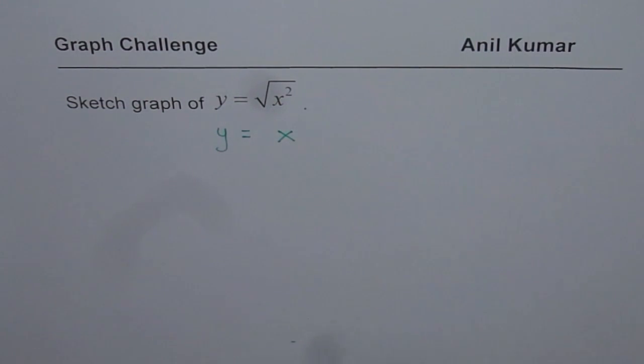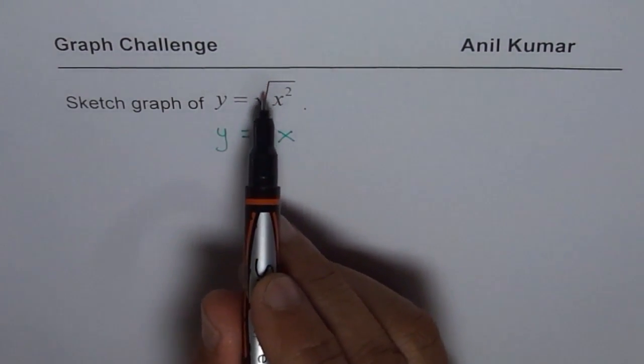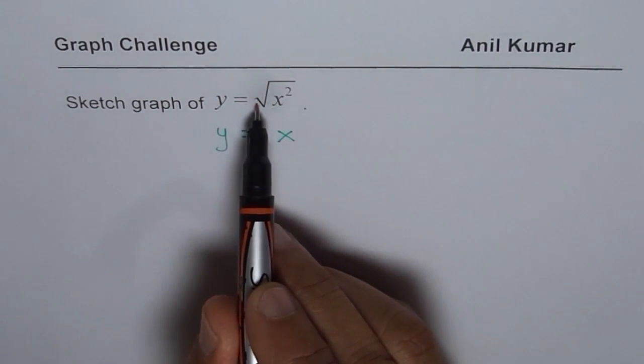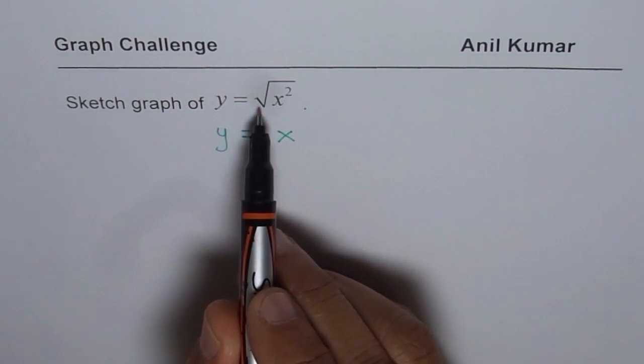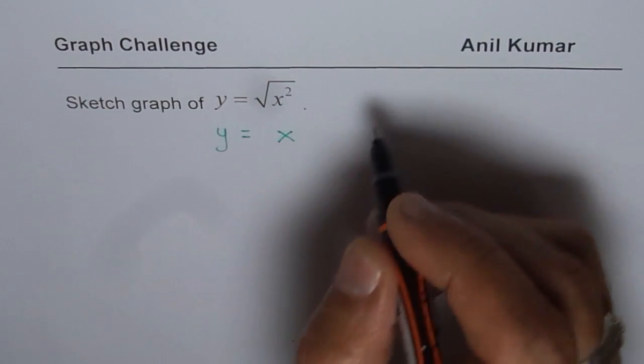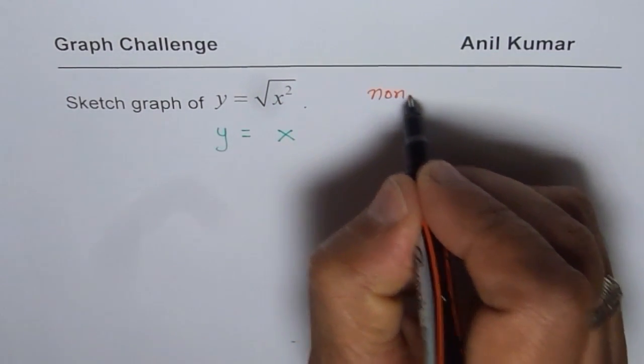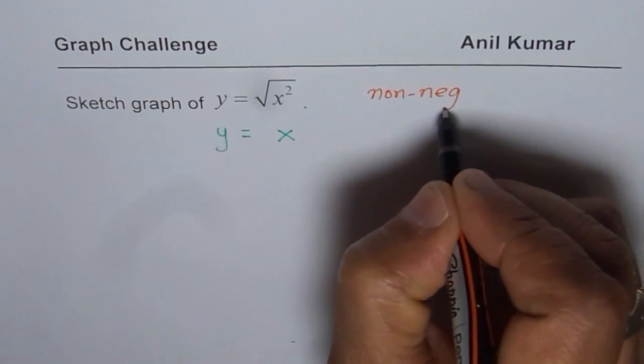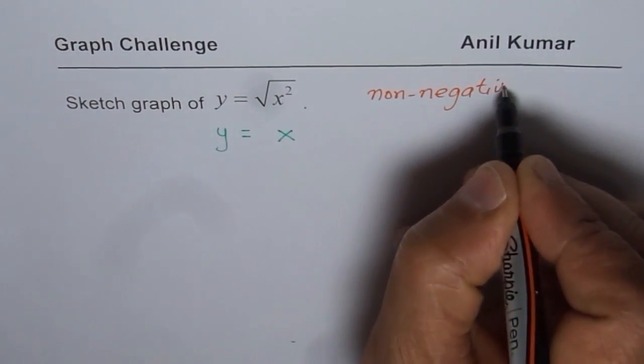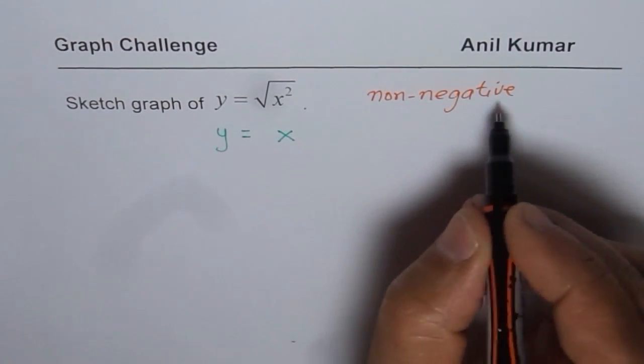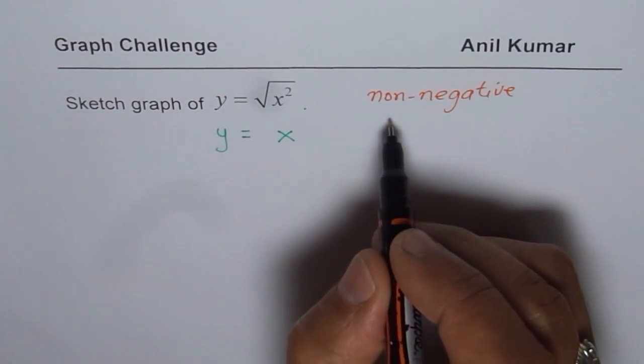Now, let me explain you how. It is important to know that whenever you are trying to find square root then whatever you get will always be non-negative. So this is always non-negative. So that is expected. So the output is non-negative. That means it could be 0 or positive.